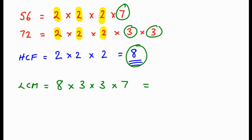I'd use a calculator. 8 times 3 times 3 times 7. I'm just firing up my calculator now. Remember, this will be quite a high number: 504. So that means that 504 is the first number that appears in both the 56 and the 72 times table.